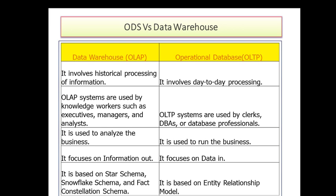OLAP is used to analyze the business — we analyze it and take decisions. Whereas OLTP is used to run the business; it handles day-to-day transactions. In OLAP, the focus is on information output — providing information for decision-making. Whereas in OLTP the focus is on data input.